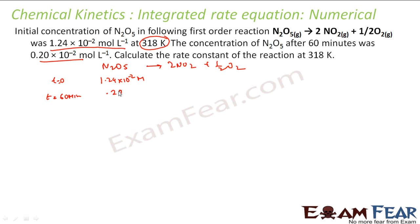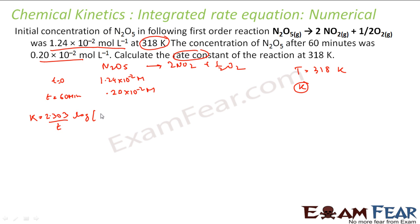The concentration has decreased and the temperature is given as 318 Kelvin. We have to find the rate constant k. The equation we know is: k = 2.303 / t × log(r₀ / r). Let's find this now — put the value: 2.303 divided by time 60 minutes.